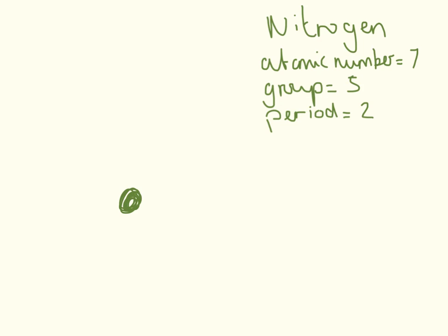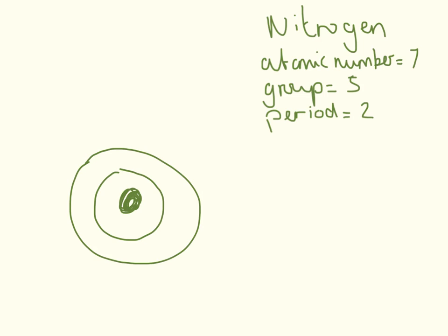We're looking at nitrogen now. Nitrogen's atomic number is seven, so it has seven electrons. It's in group five, so it has five electrons on its outer shell, and it's in period two, so it has two shells. So this is my nucleus — two shells because it's period two — and we fill in the seven electrons: two in the first shell, then three, four, five, six, seven in the second shell.